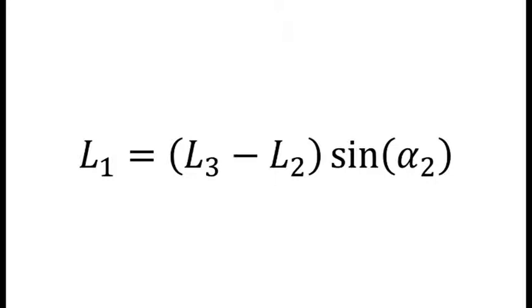Finally, L1, the offset distance, can be found using this final equation: L1 is equal to L3 minus L2 times sine of alpha 2.